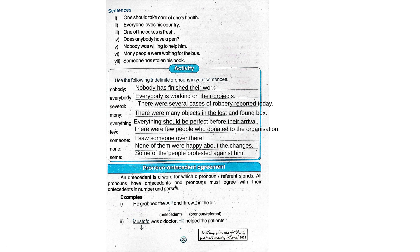All pronouns have antecedents, and pronouns must agree with their antecedents in number and person. For example: He grabbed the ball and threw it in the air. Ball is the antecedent and it is the pronoun or referent.